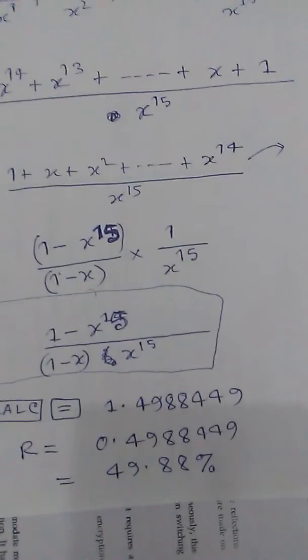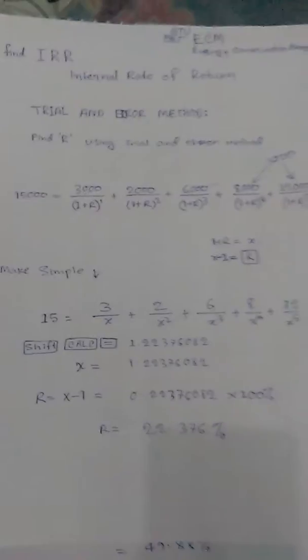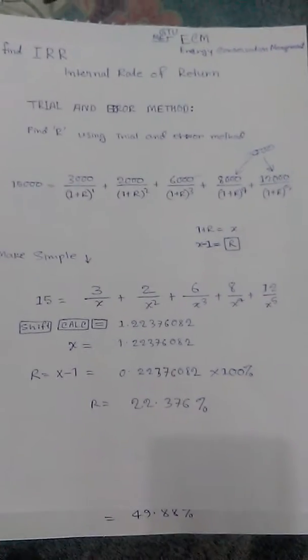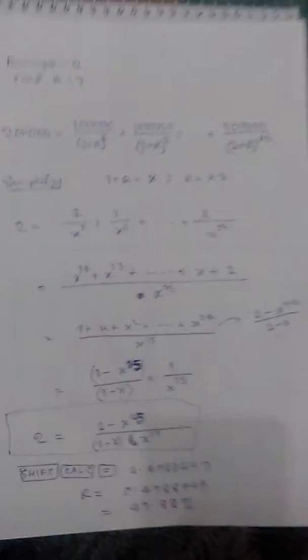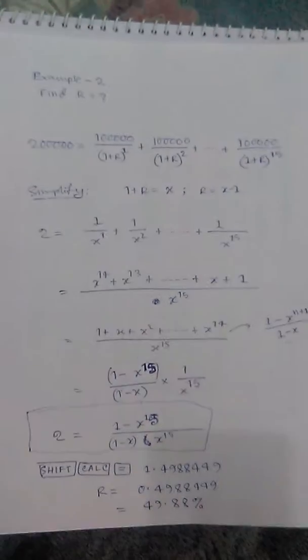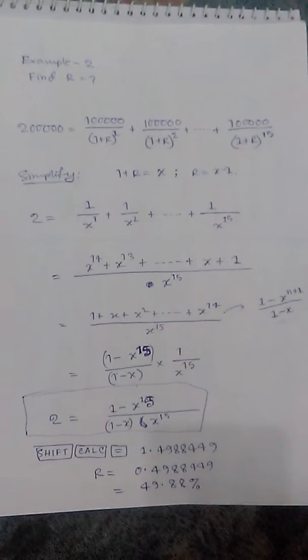This is the simplest way to find the value of R. That is a trial and error method. This is the previous example. Just if you want to remember, just pause it and have a look at it. And this is for the second example. Okay, so if you have not seen the first example, then...